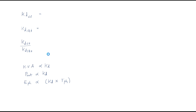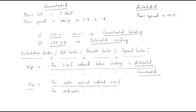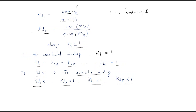The most important formula here is the nth harmonic distribution factor: kd_n = sin(m·n·γ/2) / (m·sin(n·γ/2)). We will now do some analysis using this equation.